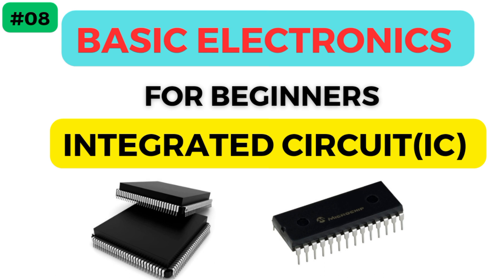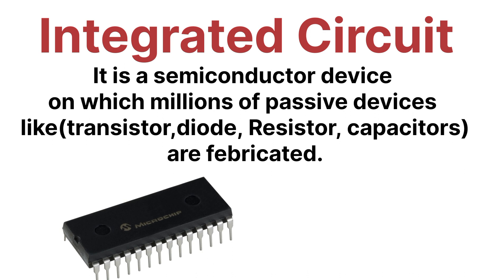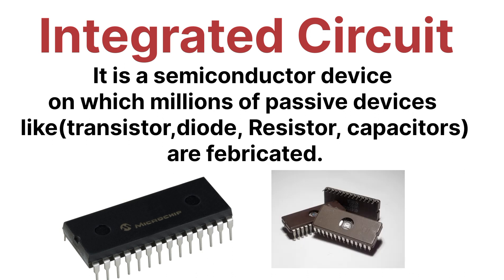An IC or integrated circuit is a semiconductor device on which thousands or millions of tiny resistors, capacitors, diodes, and transistors are fabricated. It is a semiconductor device on which thousands or millions of tiny passive elements such as resistors and capacitors are fabricated.